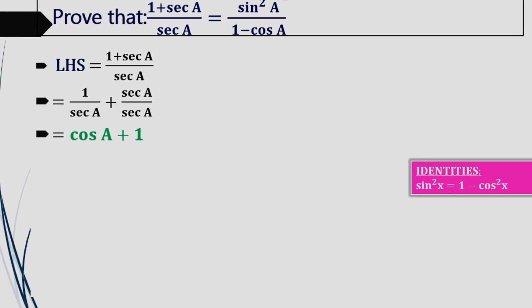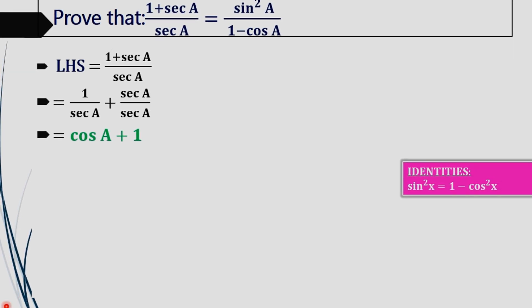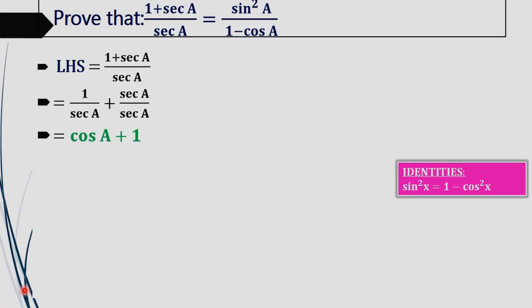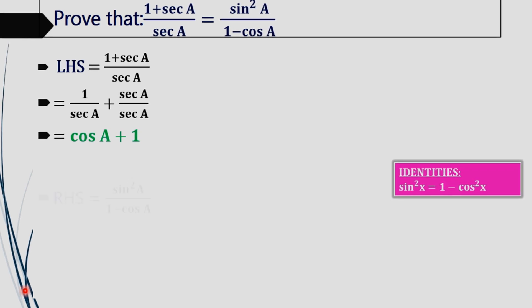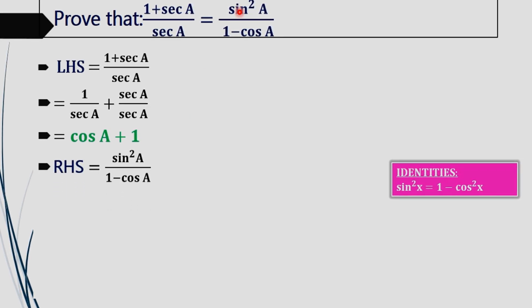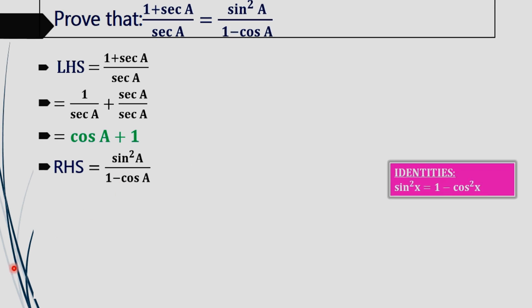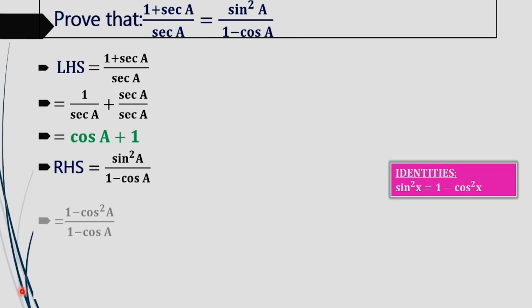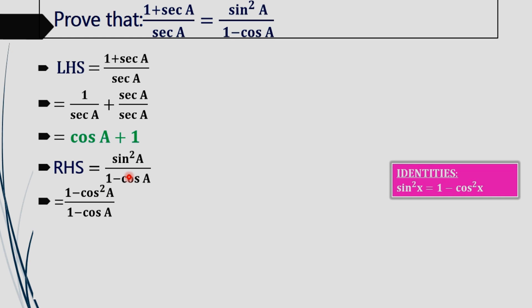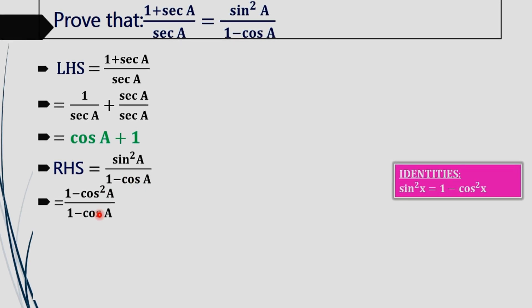Again, we will take RHS of this equation and we have to prove RHS is also equal to cos A + 1. What is RHS? sin²A / (1 - cos A). What is sin²A? That is 1 - cos²A.